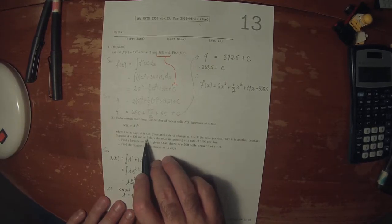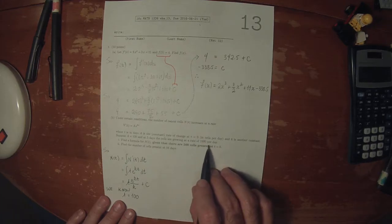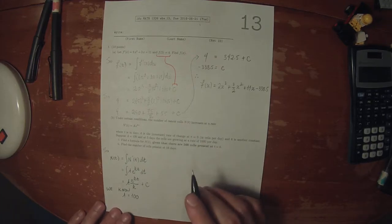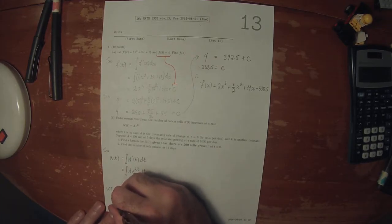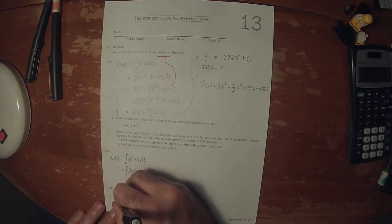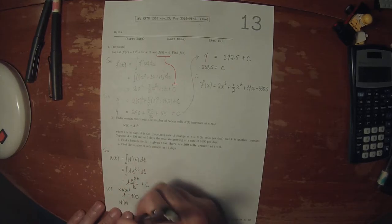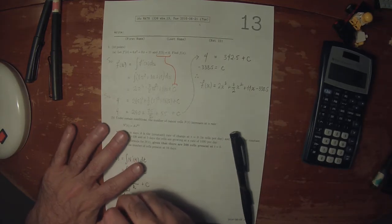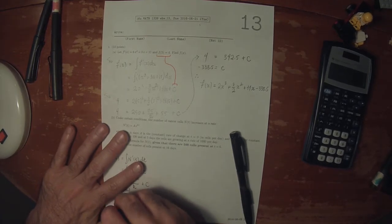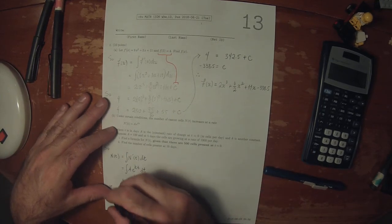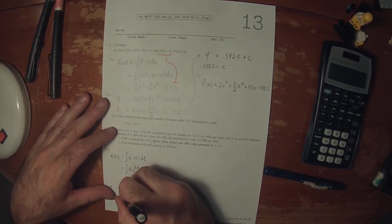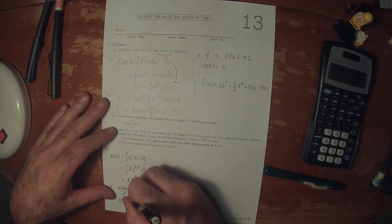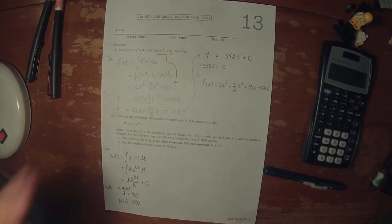We also know at five days the cells are growing at a rate of 1,000 per day. That means that the derivative evaluated at 5 is 1,000.